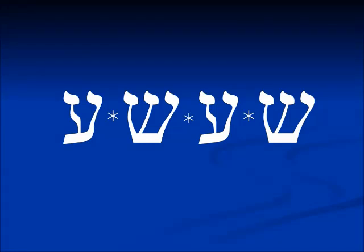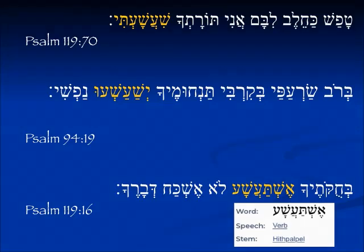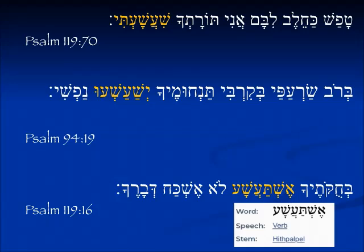Another four-letter root we see somewhat is shin-ayin-shin-ayin. It's a little harder to hear the pil vowels because of the ayin, but we can still recognize it. This verb is generally translated as 'to take delight in.' There's also another video touching on all the shin-ayin verbs and their related meanings — I'll put the link in the description.